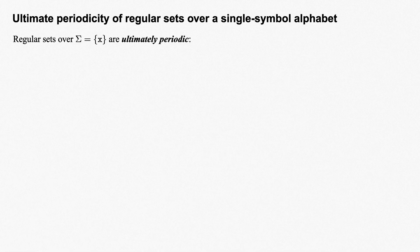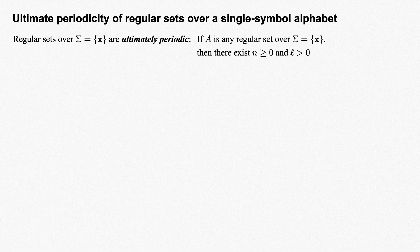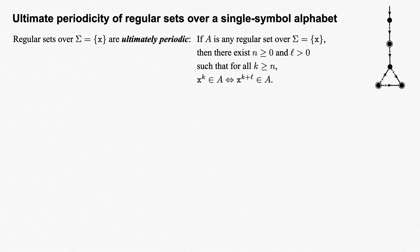We've seen that regular sets over a single symbol alphabet, say sigma containing just x, are characterized by the fact that they're ultimately periodic, meaning that if A is any regular set over sigma, then there exist n greater or equal to 0 and L greater than 0, such that for all k greater than or equal to n, x to the k is in A just when x to the k plus L is in A. These were due to the structure of the accessible states for any DFA over a single symbol alphabet: some tail of length n greater or equal to 0, followed by some loop of length L greater than 0.